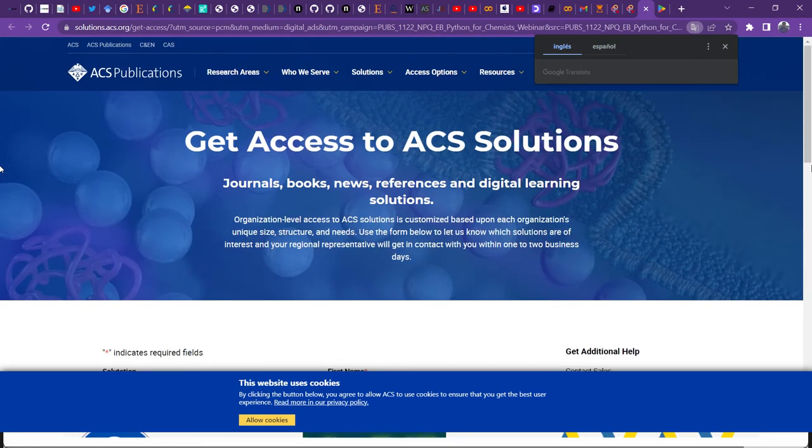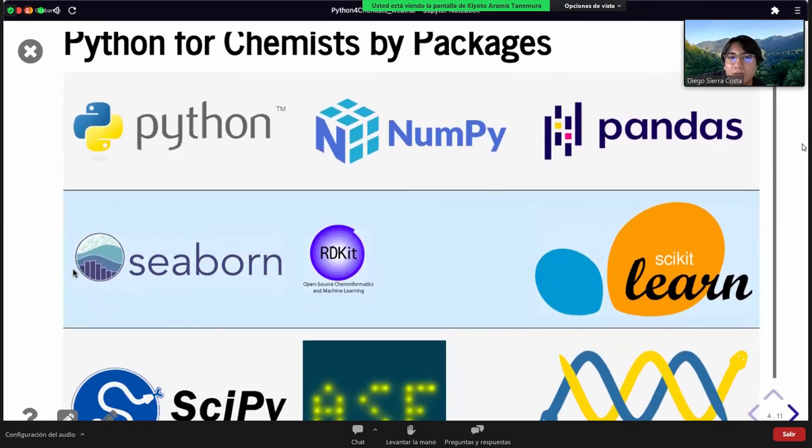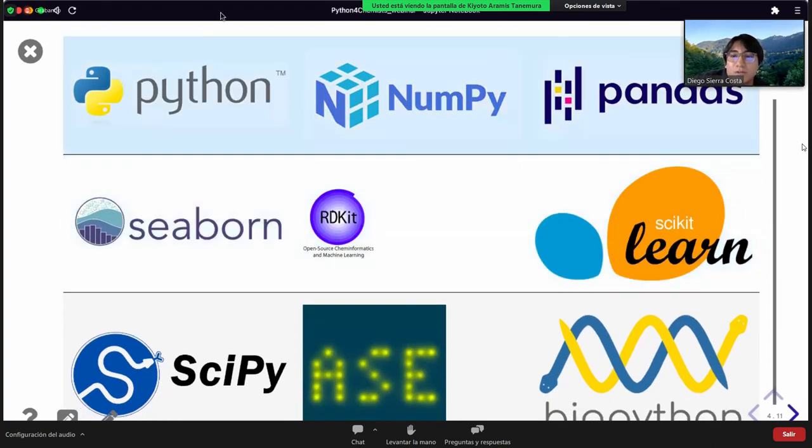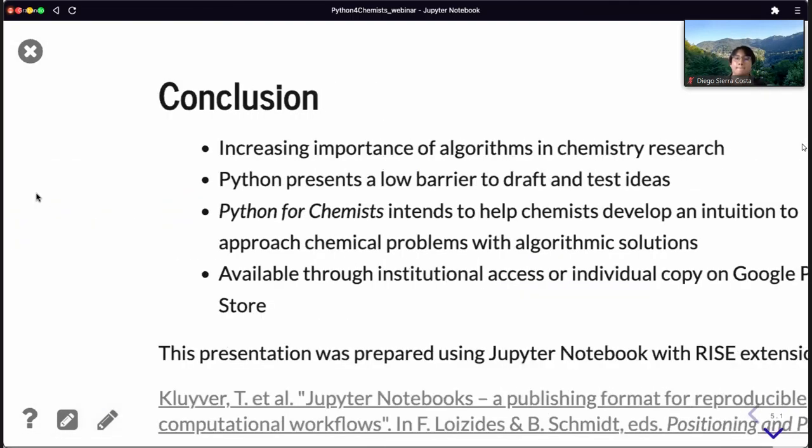These are the libraries we're using, in case you're interested in looking at them into more detail. We have Python, NumPy for linear algebra, pandas for data table, Seaborn for visualization, RDKit for cheminformatics, scikit-learn for machine learning, SciPy for general more complicated scientific functions, ASE as an interactive way to deal with quantum chemistry programs, and BioPython for computational molecular biology.